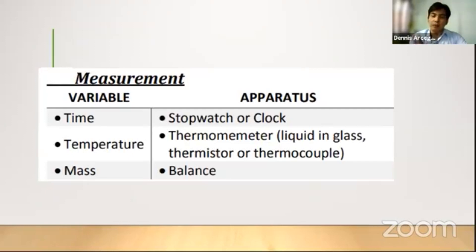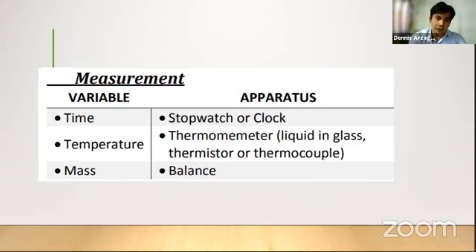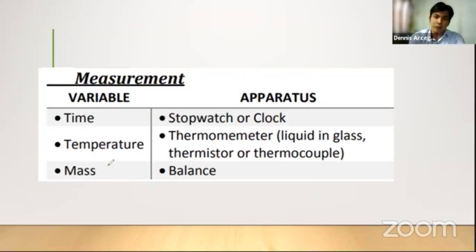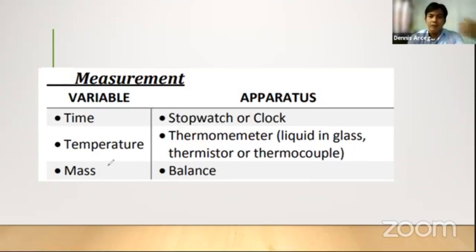For measurements, you have these variables: time, temperature, and mass. For time, you have a stopwatch or clock to measure. For temperature, you have a thermometer. For mass, you have the balance. For length, a ruler is used to measure distances between one millimeter and one meter. If it's less than one meter and higher than one millimeter, you can use the ruler. For even smaller lengths, you use a micrometer screw gauge. The standard unit for length is meters.